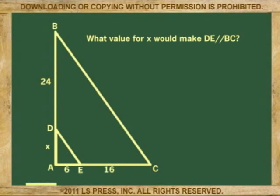In this example, we have to find the value for x that would make the lines parallel. The value, of course, would be proportional to the known values. According to what we know, if the lines are parallel, then the parts AE and CE are proportional to parts AD and BD, where x is AD.